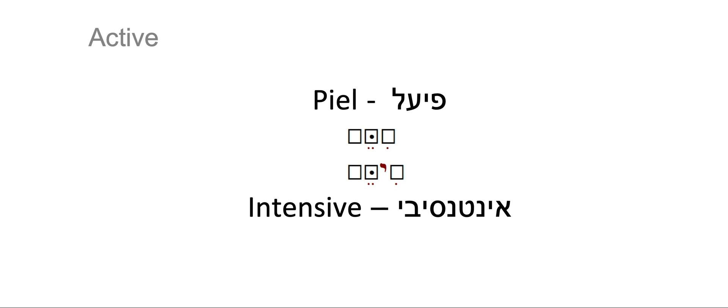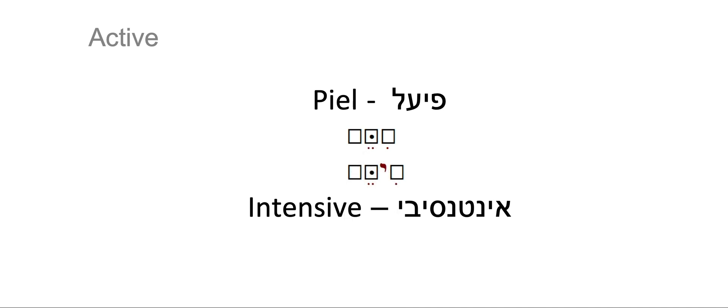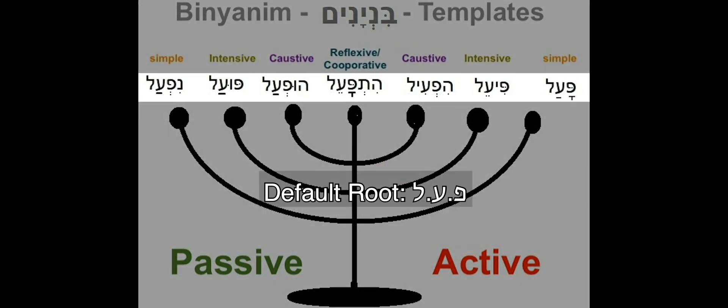Past singular masculine. Another special characteristic of this binyan is that there is almost always a dot of emphasis, a dagesh, which is the dot that you see in the second letter, right here. This dagesh will almost always appear in the second letter of the root, in every conjugation, every tense, singular, plural, masculine, and feminine.